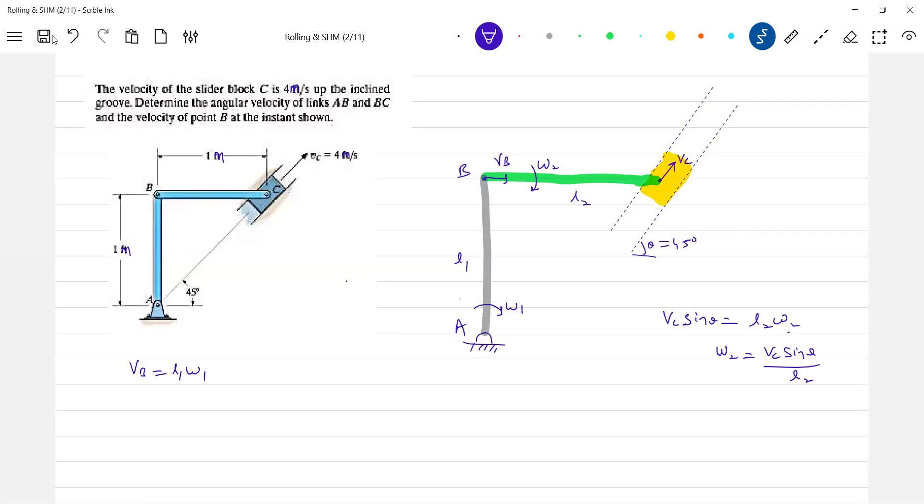Then, how to get the velocity of point B? VB equal to Vc cos theta. This is for rod BC. Okay, from Omega 2 I got it. Then, then what happened?